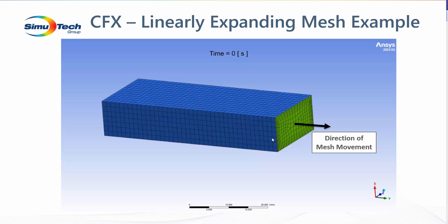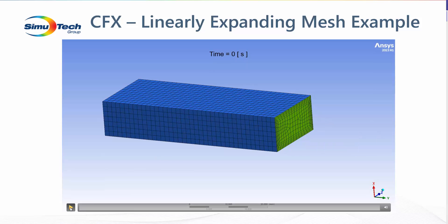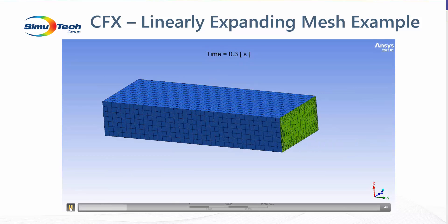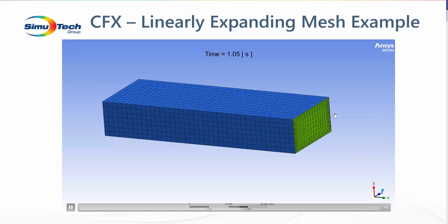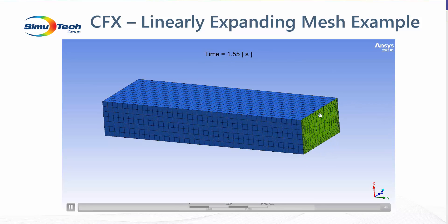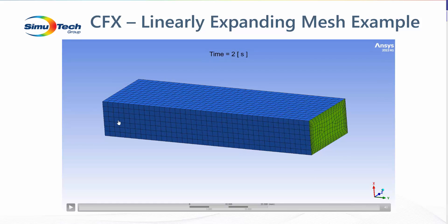For this example, I've selected a very simple geometry — a rectangular flow section. What we're doing is moving this green surface in the positive Y direction, so it's just a linear motion of the surface and the resulting expanding mesh. This is an animation created following the solution. You can see the mesh is undisturbed and undistorted on the face, and we're just expanding each of the elements uniformly along this length.